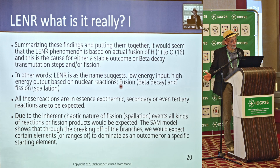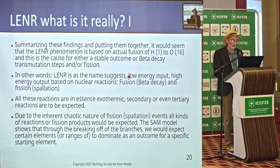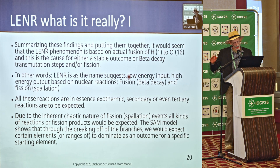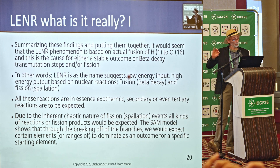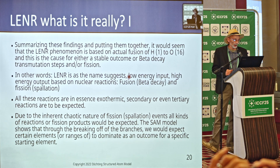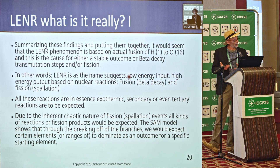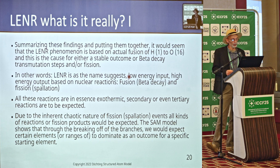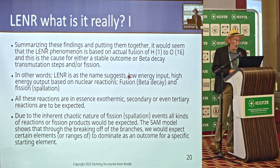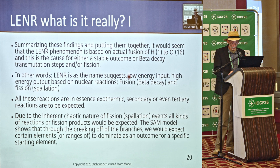Summarizing these findings: the LENR phenomenon is based on actual fusion of hydrogen up to oxygen — not much more, probably because it becomes too difficult to resettle in a proper way, meaning you get fission again. This is the cause for either a stable outcome, a beta-decay transmutation, or even fission. In other words, LENR is, as the name suggests, low-energy input, high-energy output, based on nuclear reactions — beta decay, fission, or spallation. All these reactions are in essence exothermic, and secondary and even tertiary reactions could be expected.